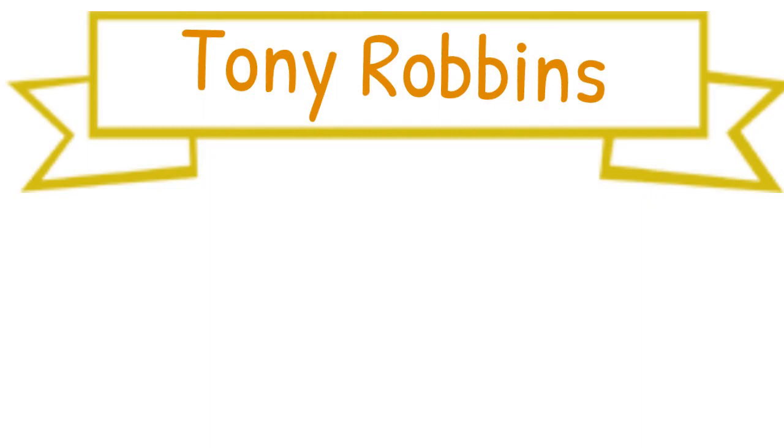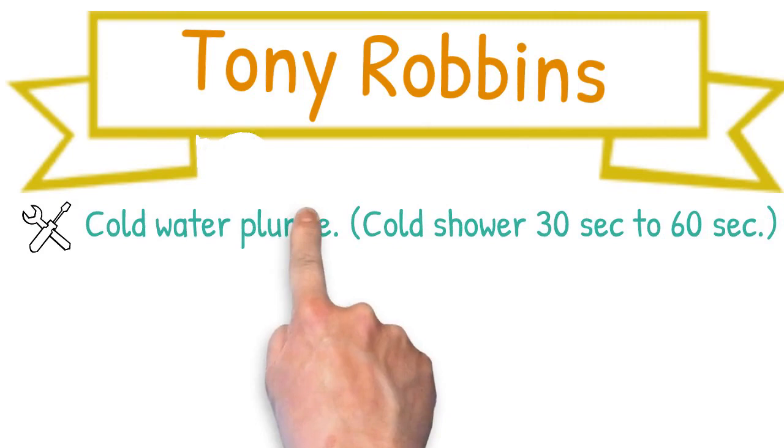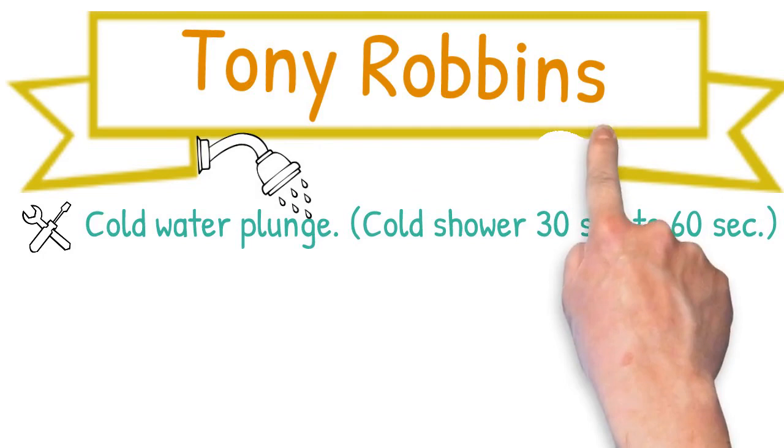Tony Robbins example tool number one, a cold water plunge. If you don't have an ice bath accessible or a cryogenic chamber, use a cold shower. It could be just 30 seconds to a minute. What it will do is shock your nerves and wake you up and give you a boost of energy.